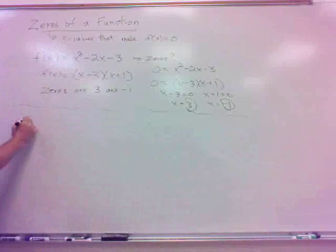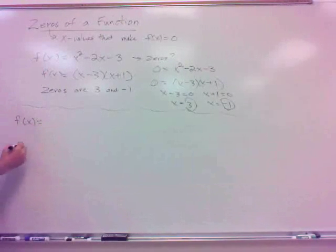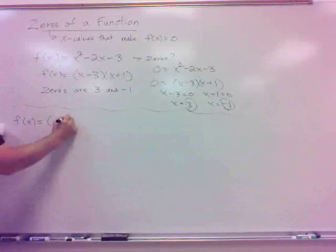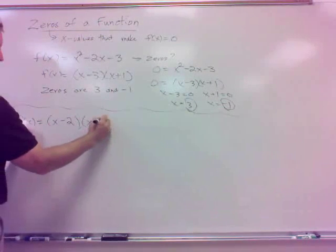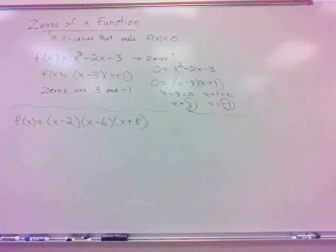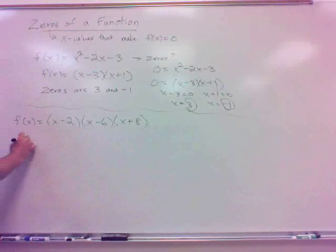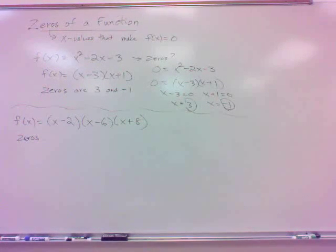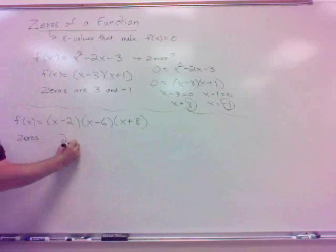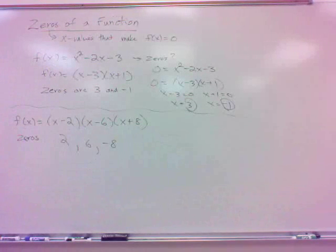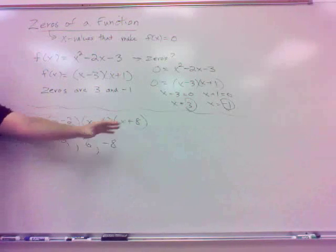Here's a second one. Say we've got f of x equals x minus 2 times x minus 6 times x plus 8 — this one is already factored out. What are your zeros there? 2, 6, and negative 8. If it's already factored out, these are pretty simple.